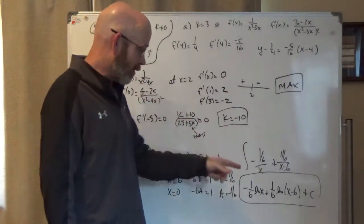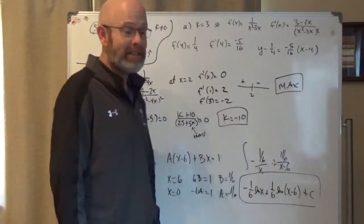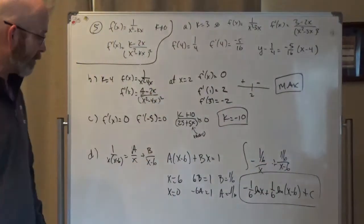And then I had to integrate it. Really simple integrals. They're both just natural logs. These are just constants. So I just get a natural log of x and a natural log of x minus 6. There's a lot of good stuff in that problem for sure.